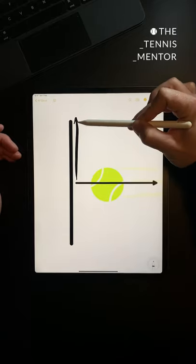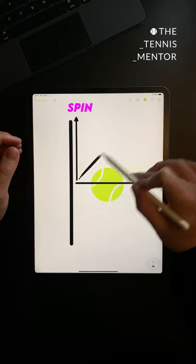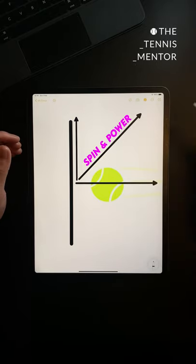Swinging your racket path upwards with your strings pointing this way will create maximum top spin but minimal power. If your swing path is somewhere in between the two then you'll be creating an even amount of top spin and power.